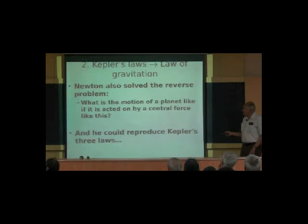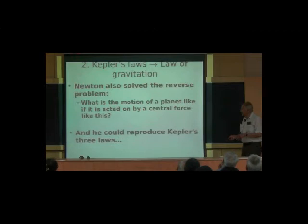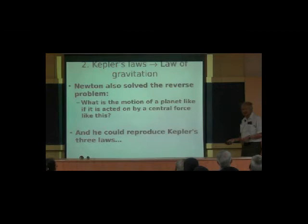Newton also solved the reverse problem: what is the motion of the planet like if it is acted on by a central force of the kind he had found? The first problem he solved was: what was the force that made the planet move in its orbit? Now he asked: what is the motion of the planet if acted on by a central force? He could reproduce Kepler's laws of motion by the application of this solution.